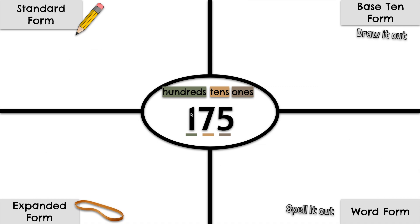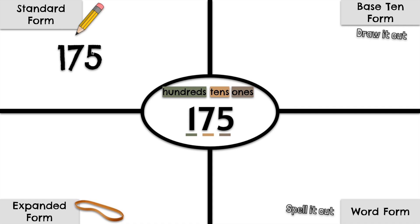Here we have 175. The 5 is in the 1's place, the 7 is in the 10's place, the 1 is in the 100's place. Let's show this number in standard form — that means we will simply write it down. 175.